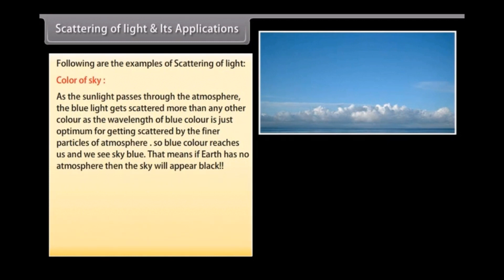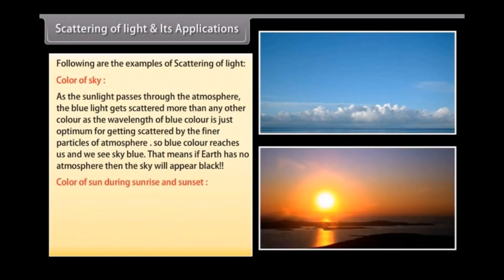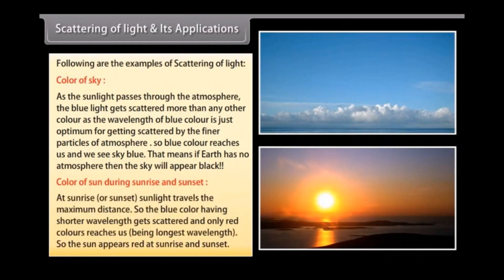If Earth had no atmosphere, the sky would appear black. At sunrise and sunset, sunlight travels the maximum distance through the atmosphere, so blue light — having a shorter wavelength — gets scattered away, and only red light, having the longest wavelength, reaches us. This is why the sun appears red at sunrise and sunset.